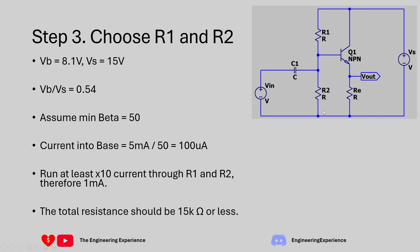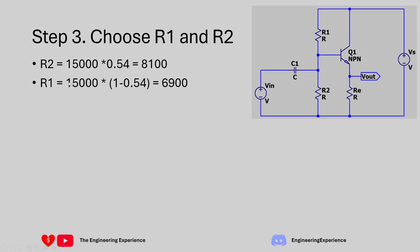We're going back to our VB VS ratio. If you have a total resistance of 15 kilo ohms for R1 and R2 we can calculate R2 to be equal to 15,000 times 0.54 which is equal to 8.1 kilo ohms on R2. And then the remainder needs to go into R1.